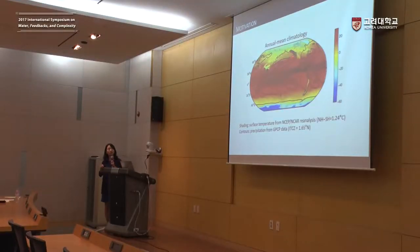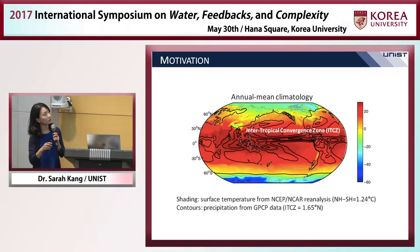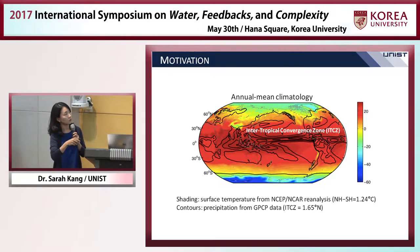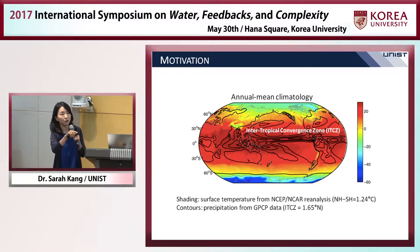Let me start by showing you the map of precipitation in contours, where the shading shows the surface temperature. You can clearly see that in the tropics there is a band of heavy precipitation called the ITCZ — the Intertropical Convergence Zone. As you can see, the precipitation over the ITCZ has sharp meridional gradients.